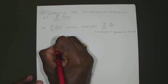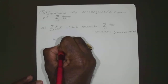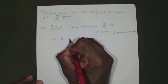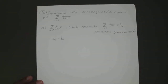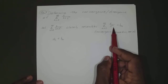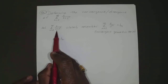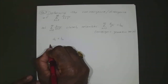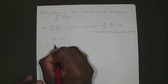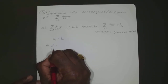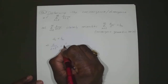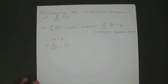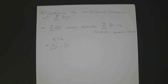We know that a sub n is less than b sub n. So if b sub n — we'll let 1 over 3^n be our b sub n — if this converges and is always greater than your a sub n, then this would converge also. So that means 1 over 2 plus 3 to the power of n would have to be less than 1 over 3 to the power of n, which is actually true.